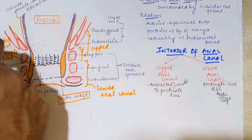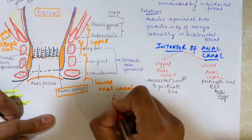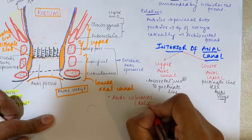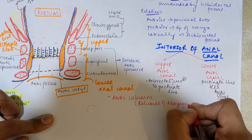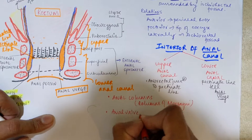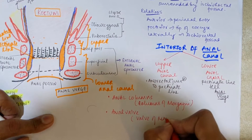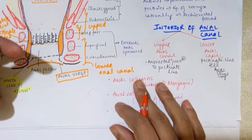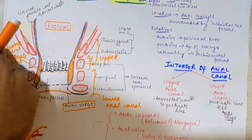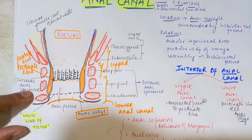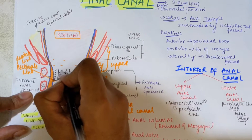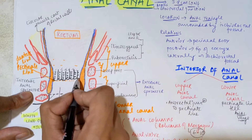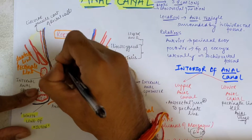In the upper anal canal, there are three important structures. The first is anal columns, also called columns of Morgagni. These are around six to ten in number and can be seen as vertical folds in the diagram.